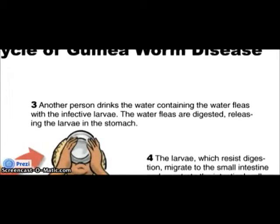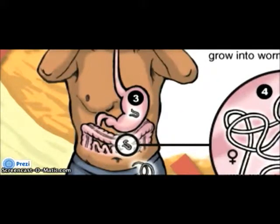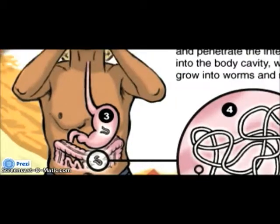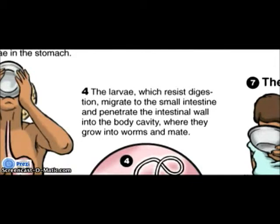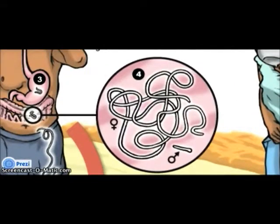Another person drinks the water containing the water fleas with infected larvae. The water fleas are digested, releasing the larvae into the stomach. The stomach acid kills the water flea but not the guinea worm larvae. The larvae, which resist digestion, migrate to the small intestine and penetrate the intestinal wall into the body cavity.